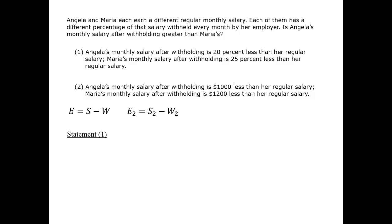Statement one gives us a couple pieces of comparative information. For Angela, E equals 0.8S. For Maria, we have E2 equals 0.75 times S2. But we have a situation with four variables and two equations. If we could construct a ratio of E to E2 and determine whether it was greater or less than one, that would allow us to answer who has the bigger effective salary, but we have no information about how S and S2 compare. Therefore, statement one is insufficient.